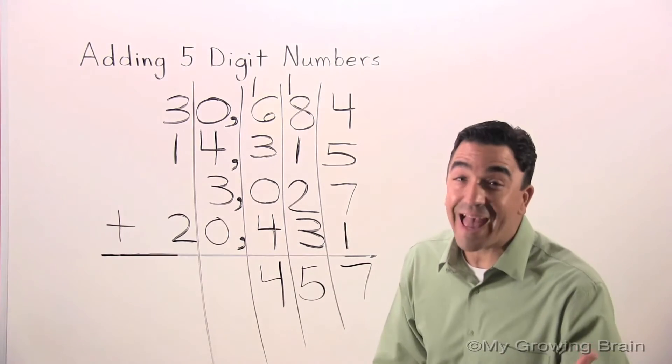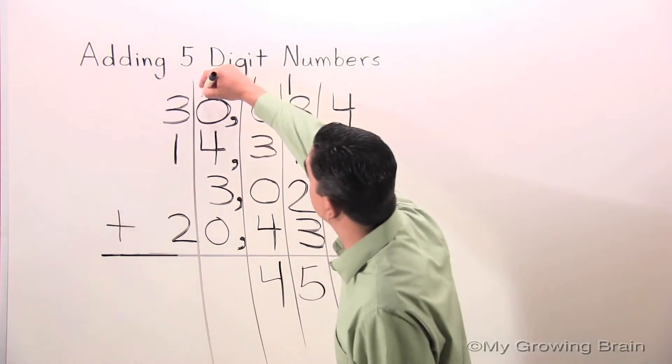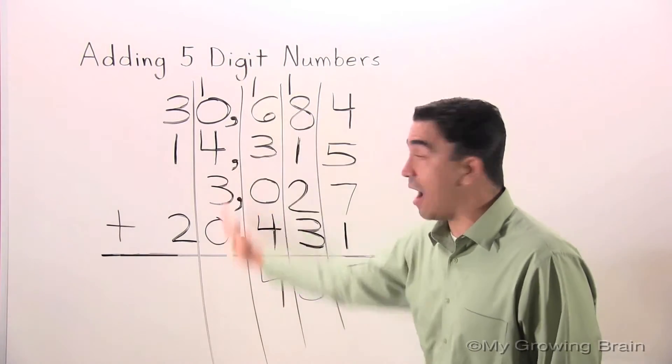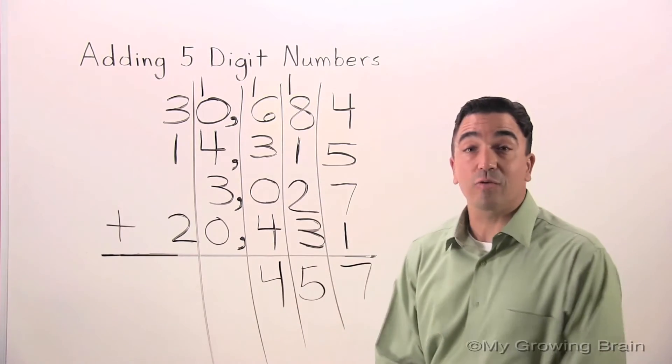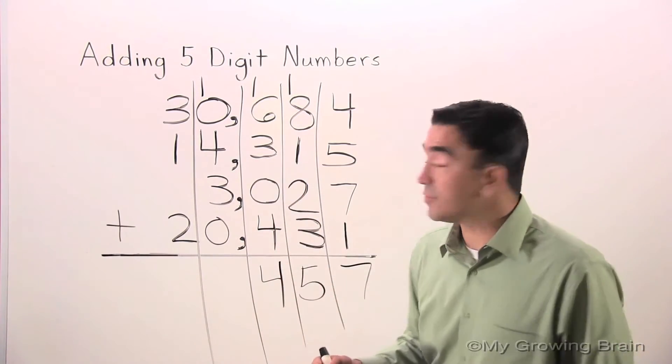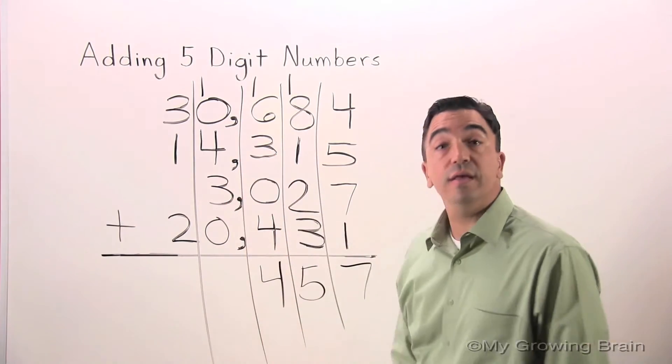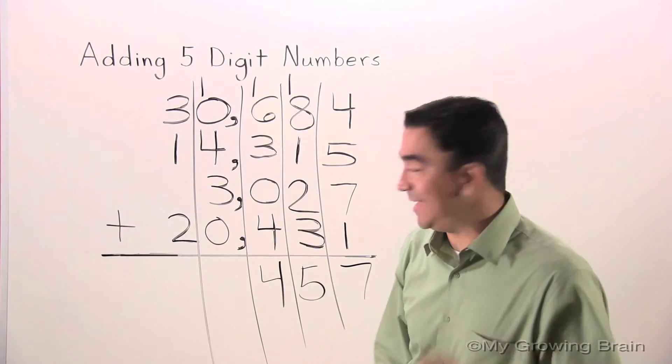Once again, I'm regrouping a one into the thousands place. You know, I can't find a group of ten, so I'm just going to add the two biggest digits. Four plus three is seven. Seven plus one is eight.